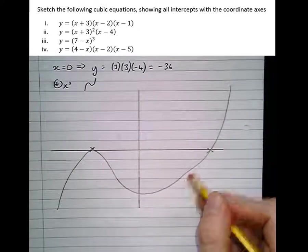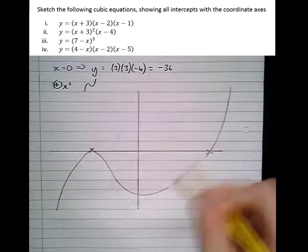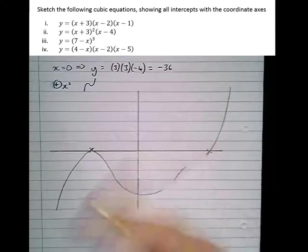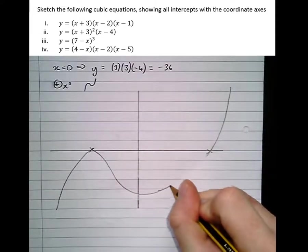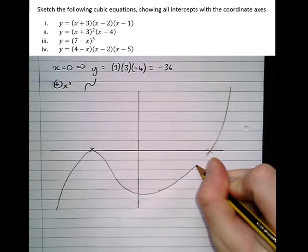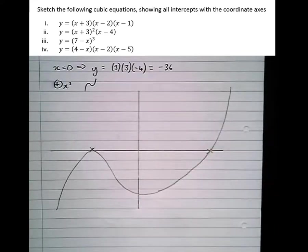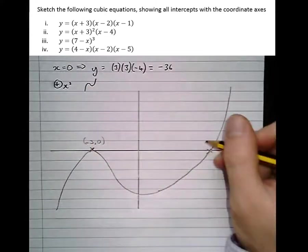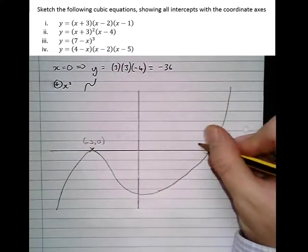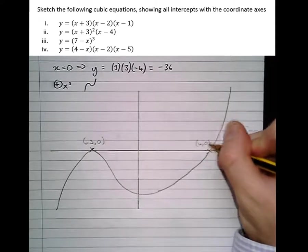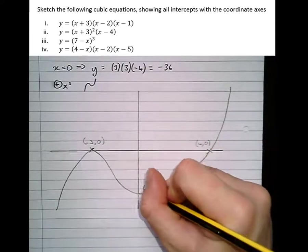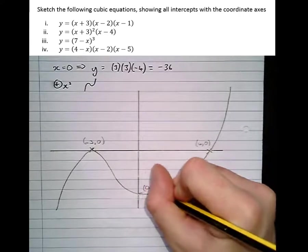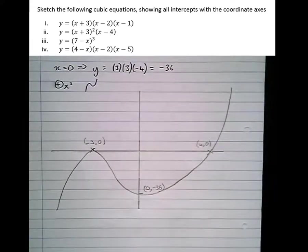And this part of the graph here isn't very good. I'm going to rub that out. I can do better than that. That's a lot better there. So here, minus 3, 0 is a root. 4, 0 is a root. The other intercept here is 0 minus 36. Notice that the scale isn't very good, but for the purposes of a sketch, it doesn't matter.